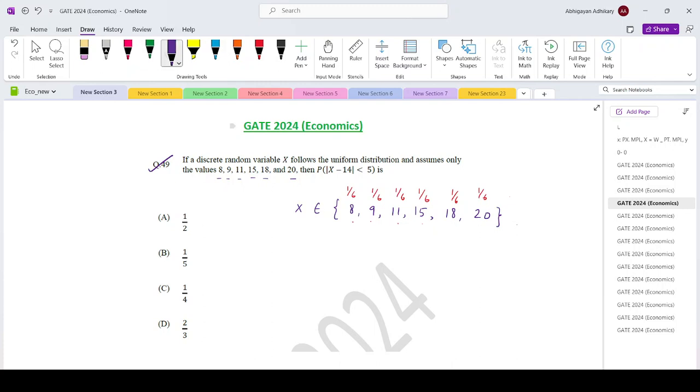Now, coming to the probability that we are supposed to find out. The probability that mod of x minus 14 less than 5. So that means probability minus 5 less than x minus 14 less than 5. That means that is same as the probability that if you add 14, so that will become 9 less than x less than 19.